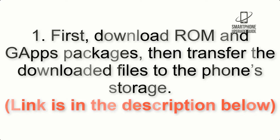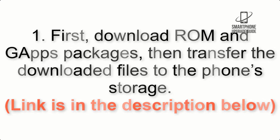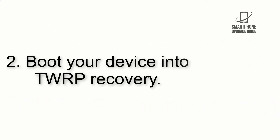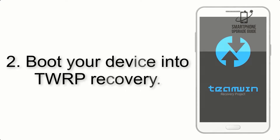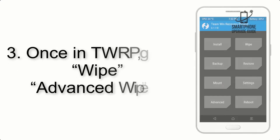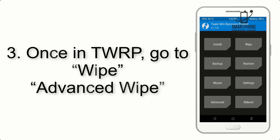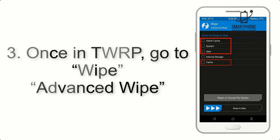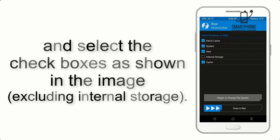Transfer the downloaded files to the phone storage — link is in the description below. Step 2: boot your device into TWRP recovery. Once in TWRP, click on Wipe Advanced Wipe and select the checkboxes as shown in the image.